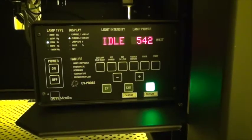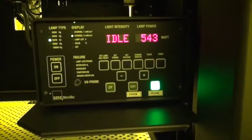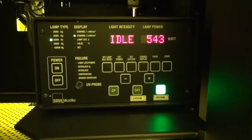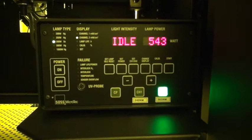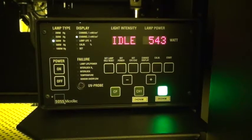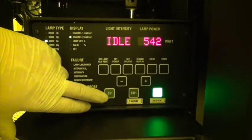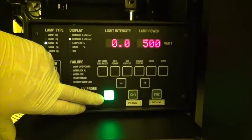Before we start our exposure process we need to make sure that the lamp is set up correctly. We want to check the set point for the constant intensity mode. We do that by switching to constant power mode by pressing the CP.